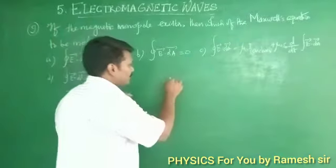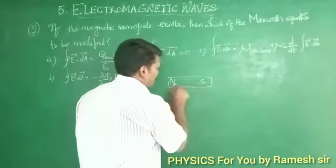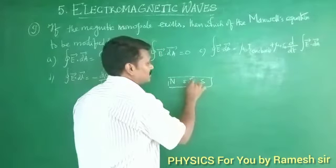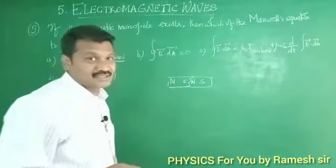Suppose it is north pole and south pole. If it is broken, you can see the south pole and north pole. That is why the monopole does not exist in a magnet.